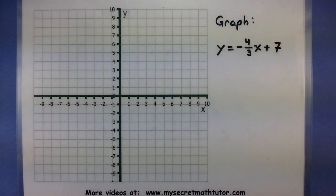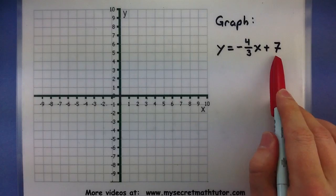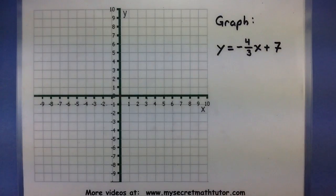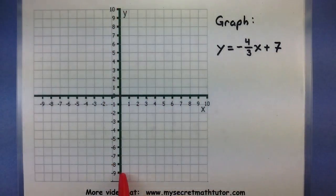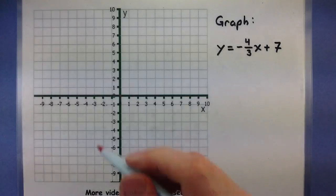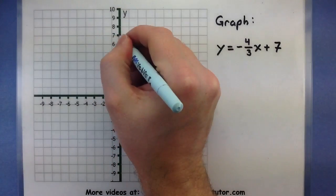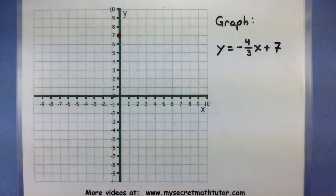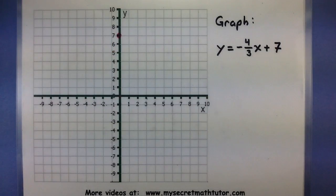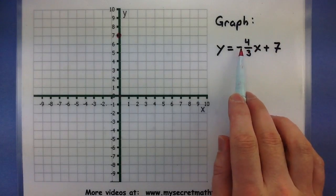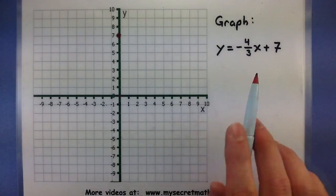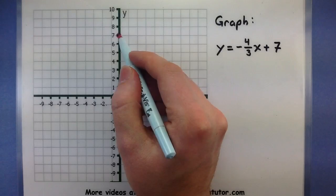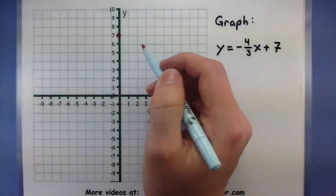We're going to graph the line y equals negative 4 thirds x plus 7. Remember to start with your y-intercept — looking along the y-axis, our first point will be at positive 7. Now I'm going to use my slope to figure out another point on this line. The slope, rise over run, tells me that I need to go down 4 and to the right 3.